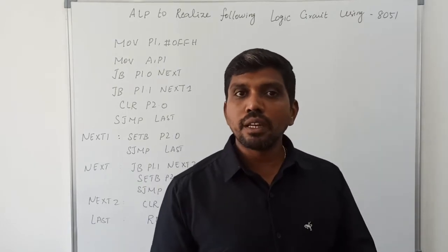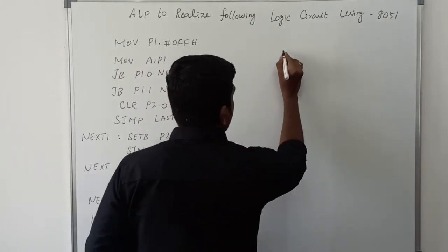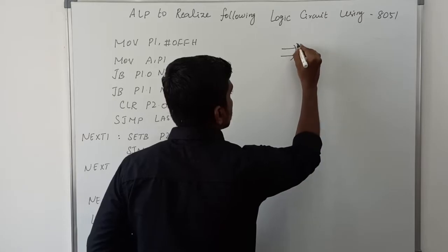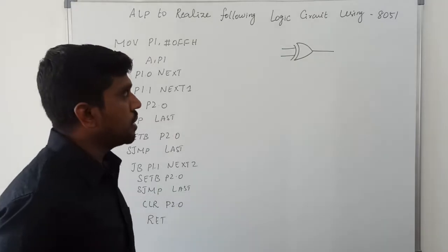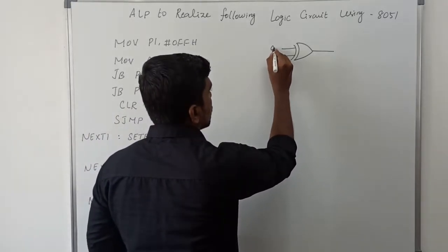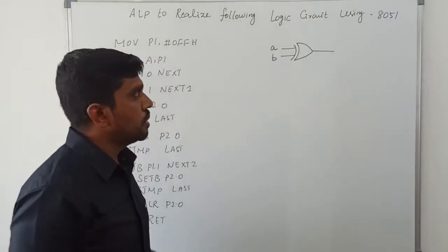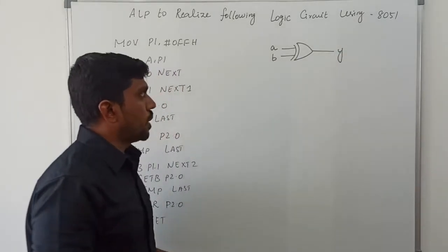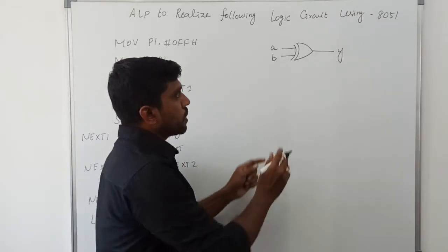Let us consider the XOR gate. This is the symbol of the XOR gate. This XOR gate needs two inputs: one input is A and another input is B. It produces a single output mainly called Y. This is the symbol of the XOR gate.